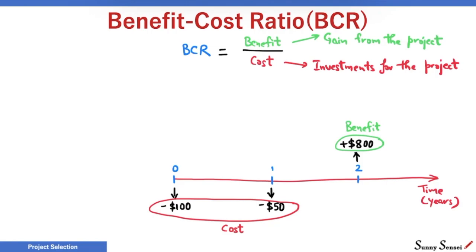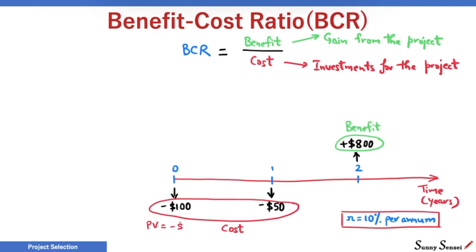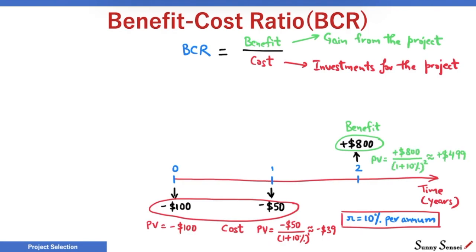Next, we will find the present value of these cash flows to capture the time value of money. We will assume 10% as a rate of return for this example. Present value of minus $100 at time 0 is minus $100. We then calculate the present values for year 1 and year 2, and proceed to calculate the BCR.